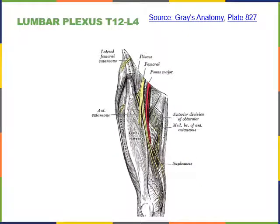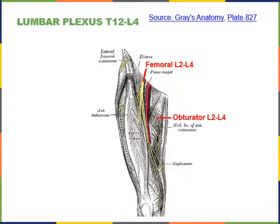An illustration shows the femoral nerve traveling down the anterior femoral region to excite the quadriceps femoris, and the obturator nerve traveling down the medial femoral region to excite adductor longus and adductor magnus.